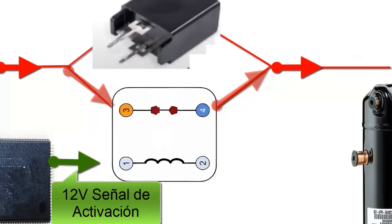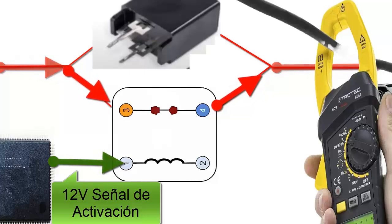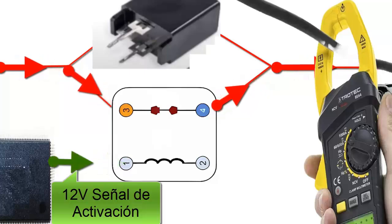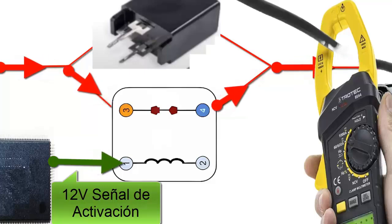High electrical current consumption in an electronic board is often due to a short circuit in its components. Primarily suspect the capacitors and resistors. Perform an inspection with a multimeter and visually to detect problems.